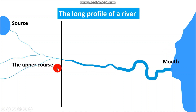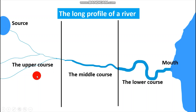We have the upper course, we have the middle course, and then we have the lower course of the river.